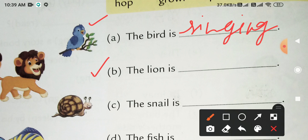Next is the lion. The lion, what does it do? Lion is roaring. R-O-A-R-I-N-G, roaring.